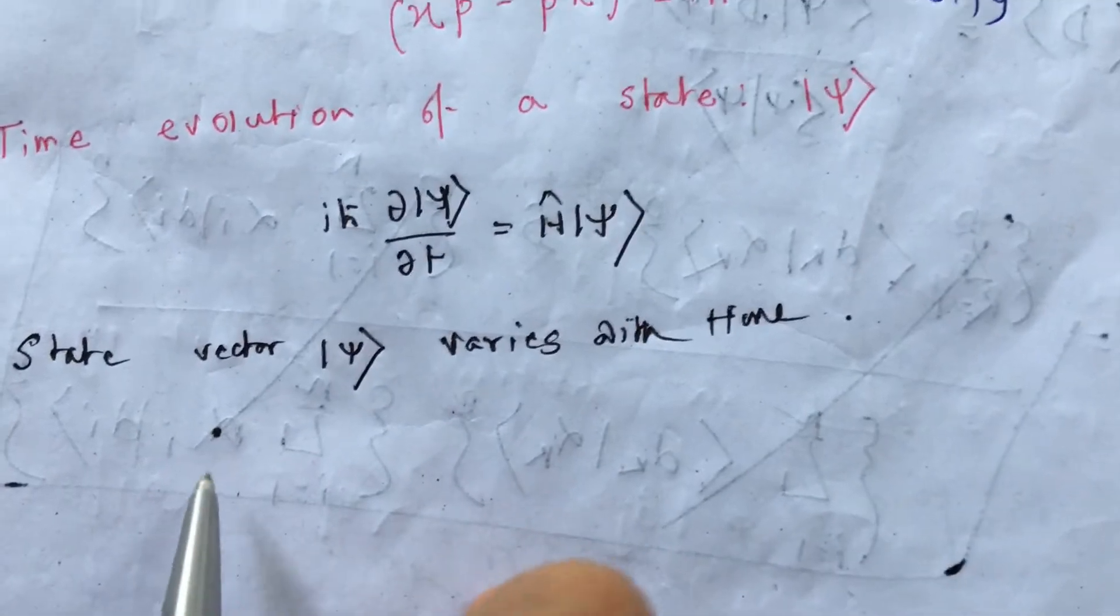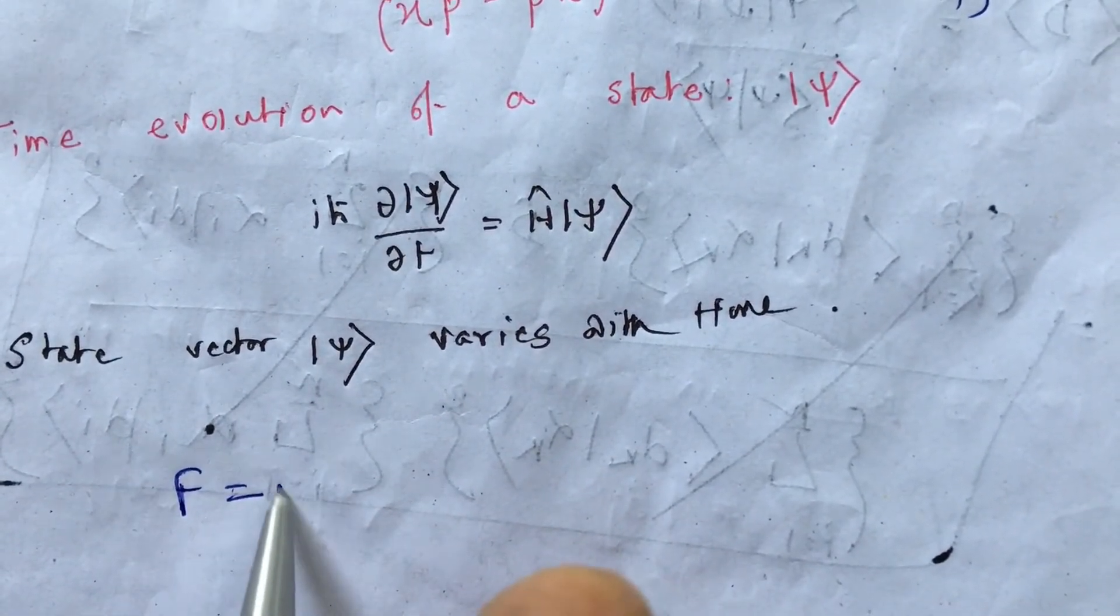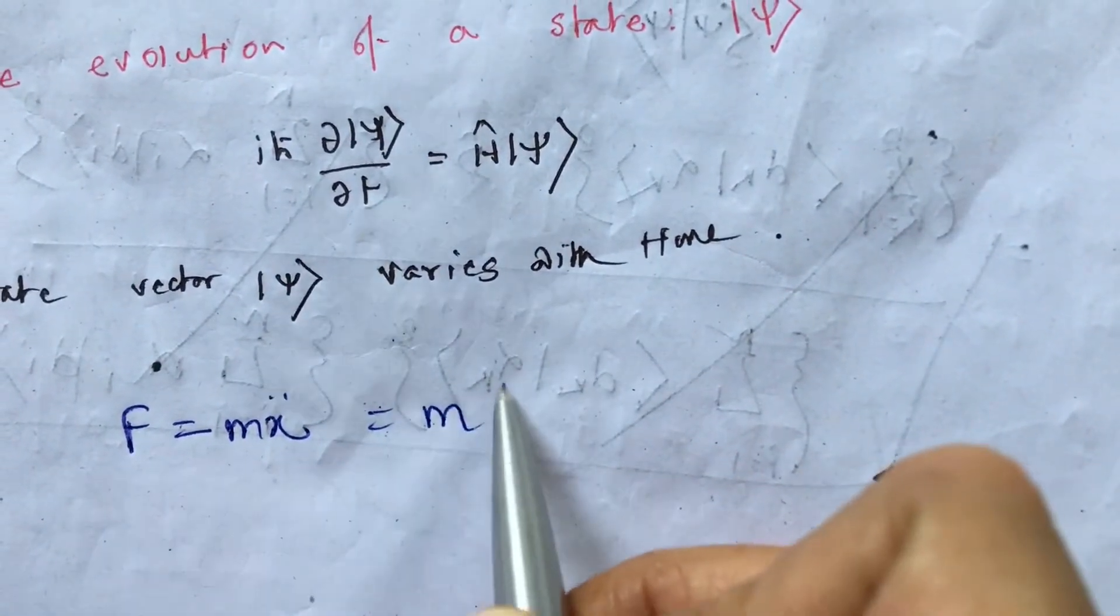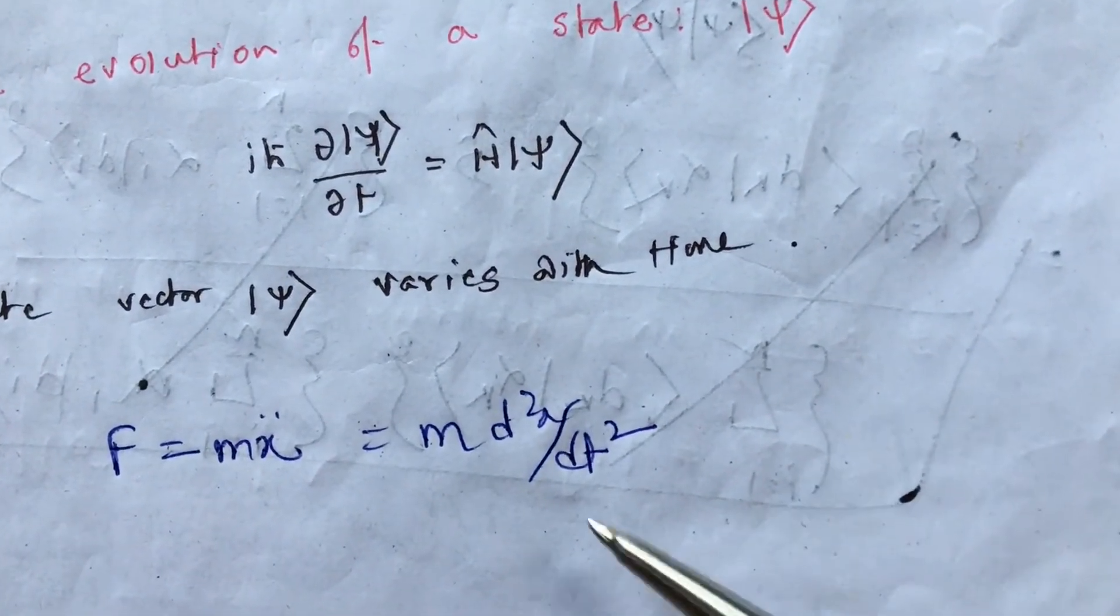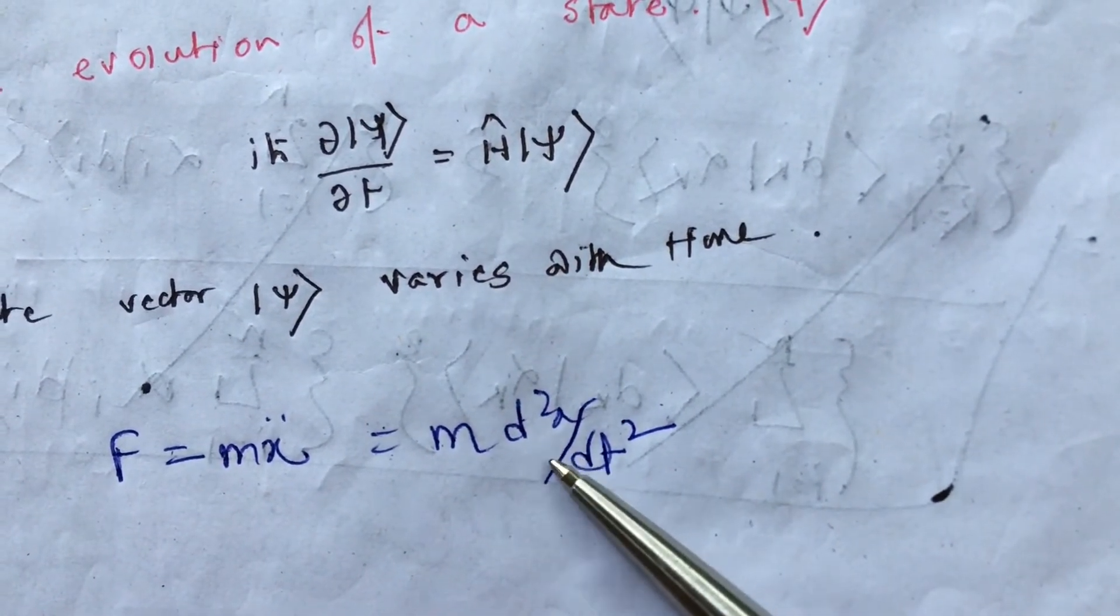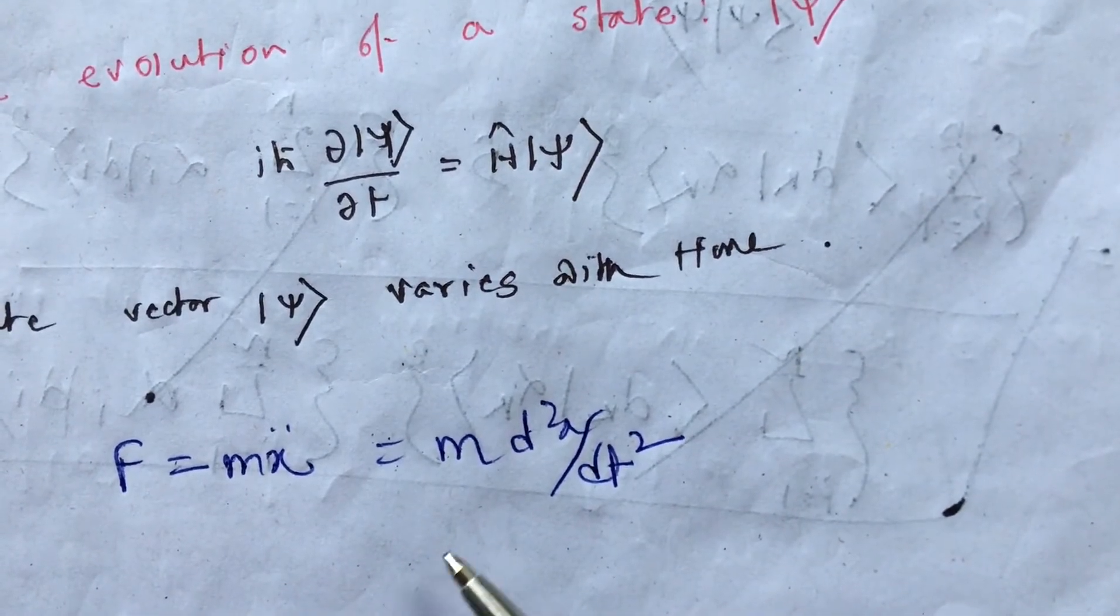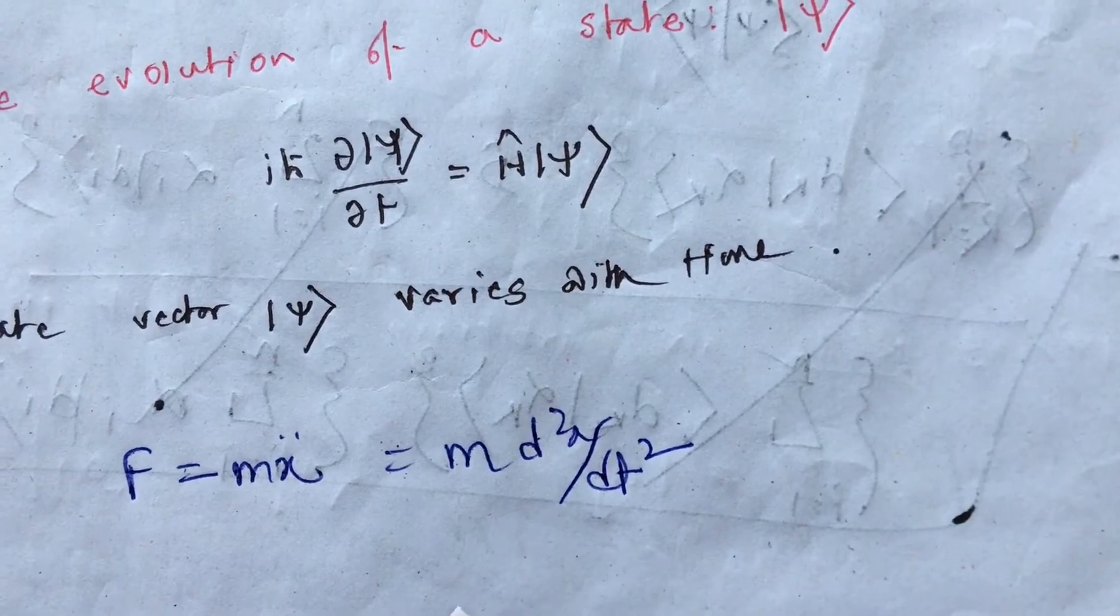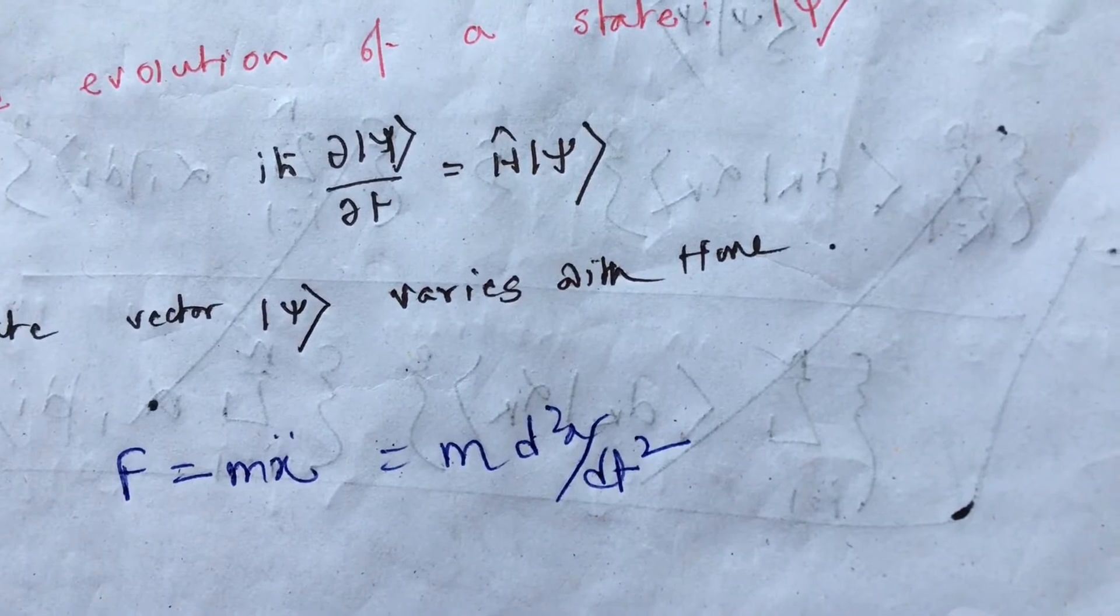Remember Newton's law. We are given force equal to mass into acceleration. So mass acceleration means d to x dt square. When you solve this, we can find out the position, how the position is changing with time. Because we were interested in the position of the substance of the system for subsequent values of time.